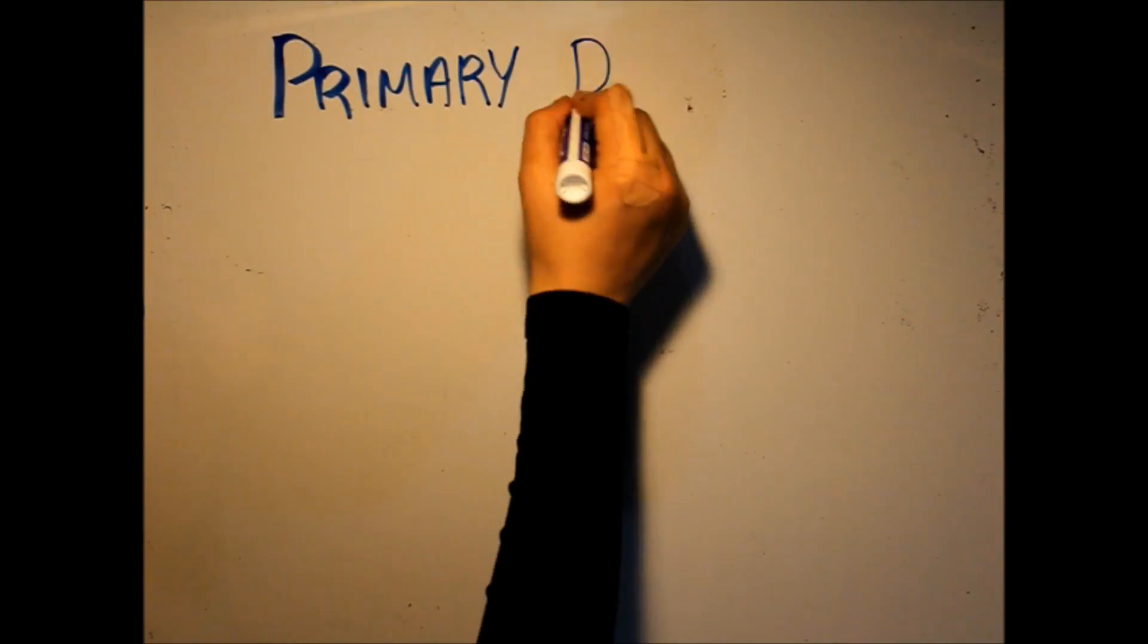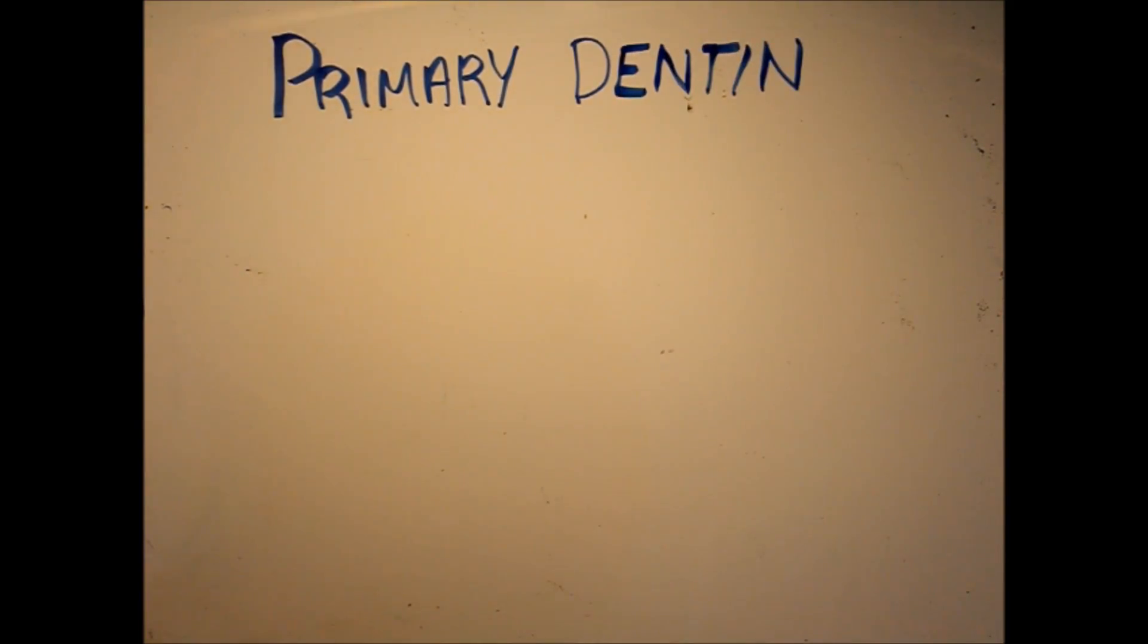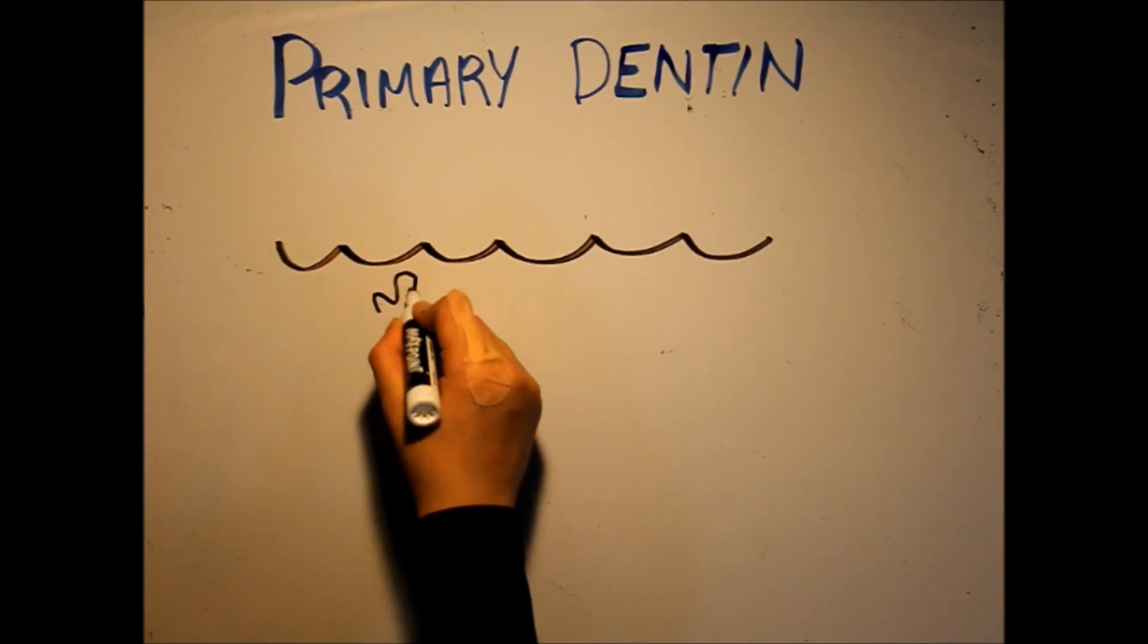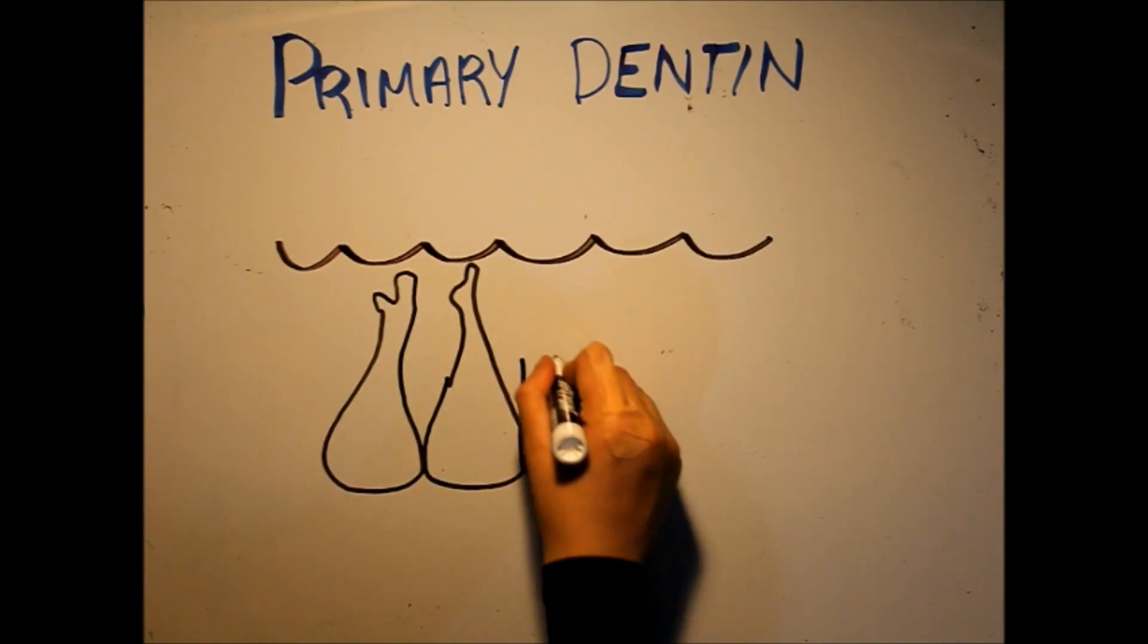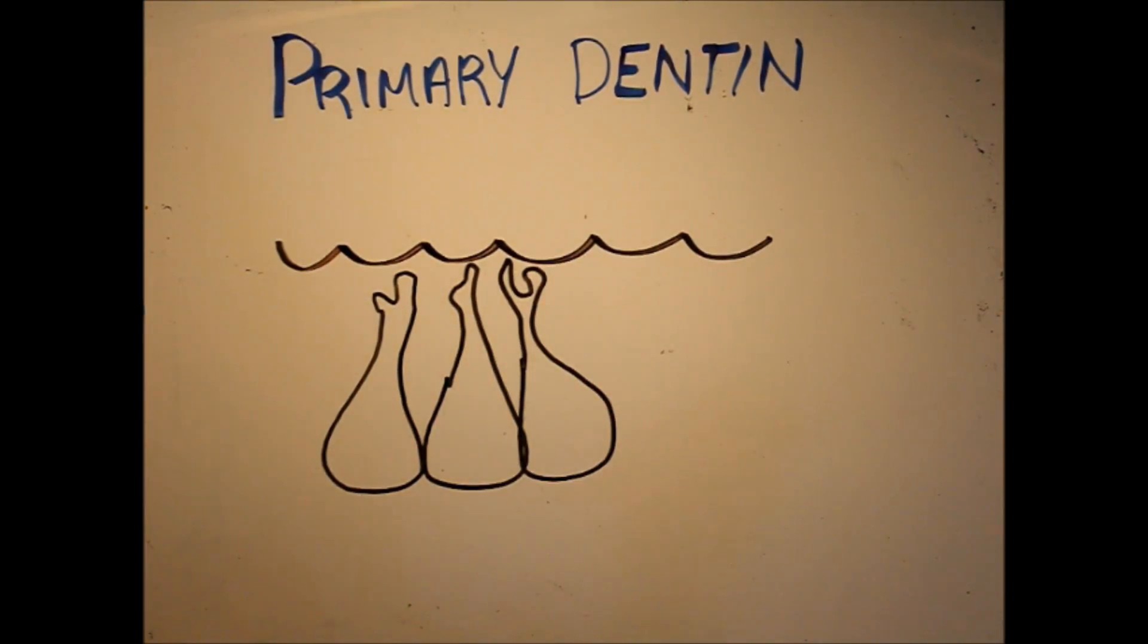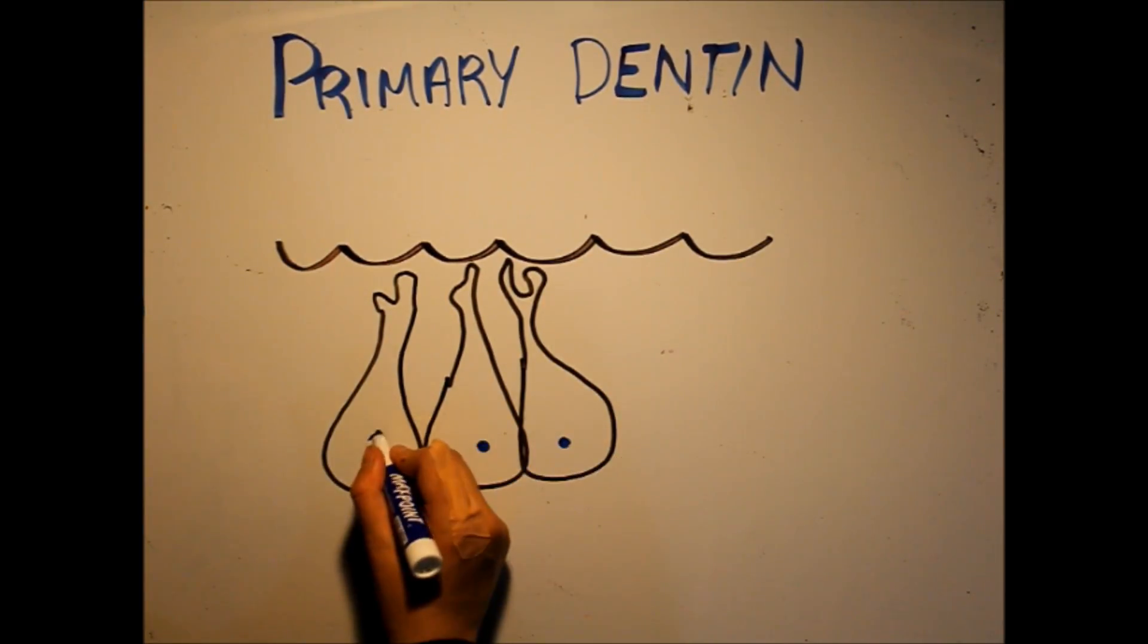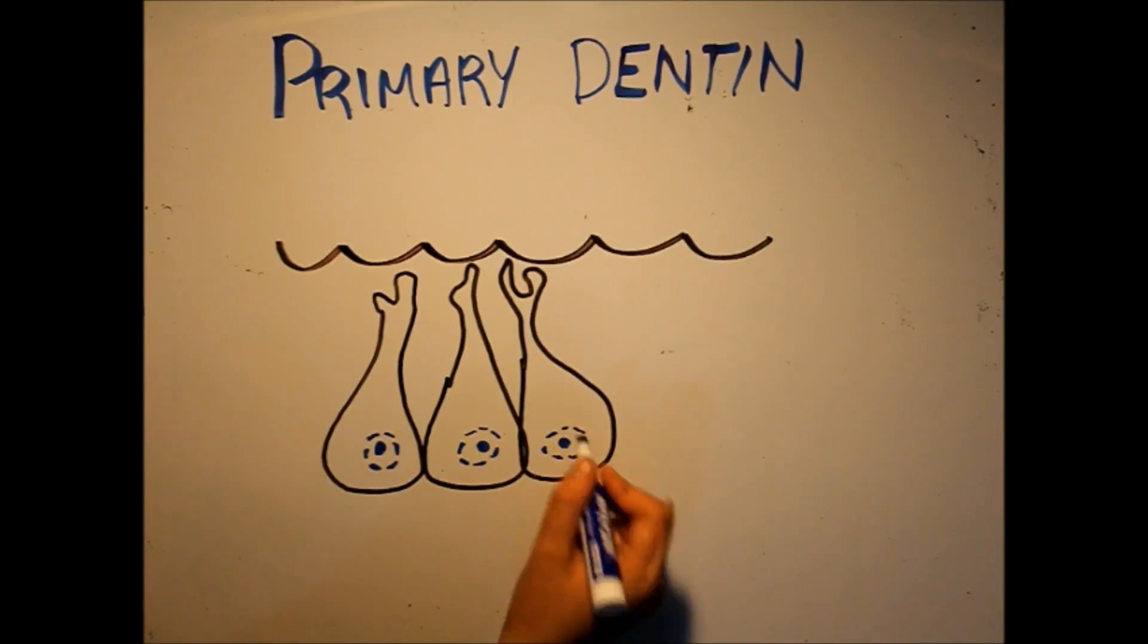The second classification of dentin follows its time of formation and consists of primary and secondary dentin. Before enamel begins to form, primary dentin is secreted by odontoblasts until the completion of root formation. Not only is primary dentin the first to form, but it also makes up the bulk of our dentin.